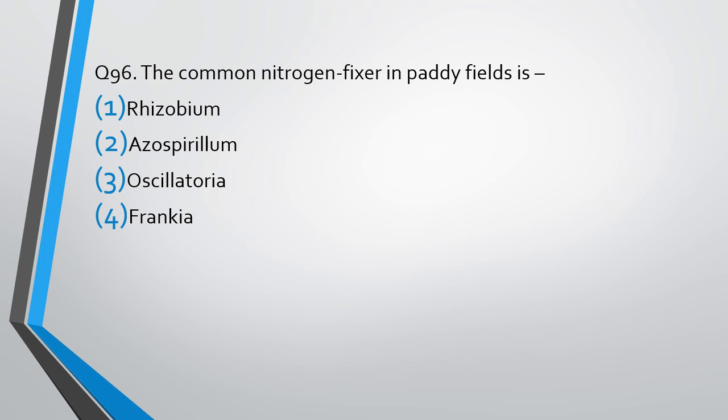Question number 96. The common nitrogen fixer in a paddy field is: (1) Rhizobium, (2) Azospirillum, (3) Oscillatoria, (4) Frankia. The correct answer is option 3, Oscillatoria.